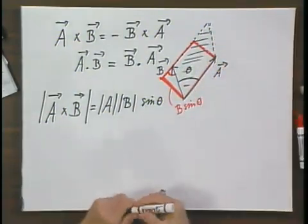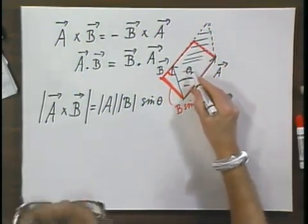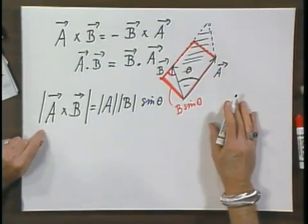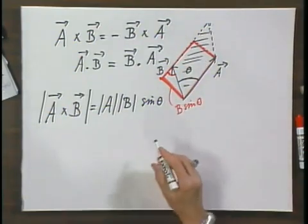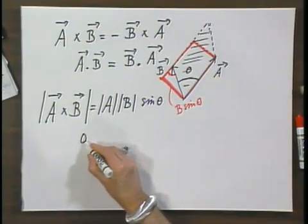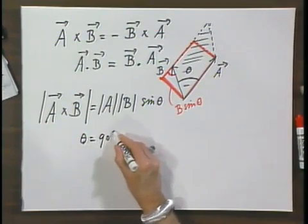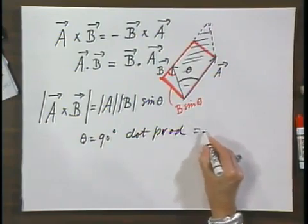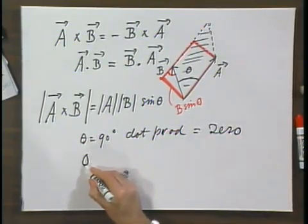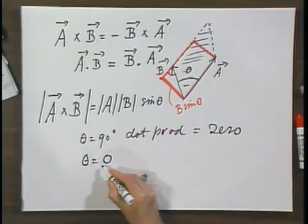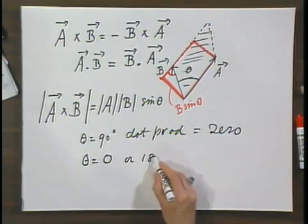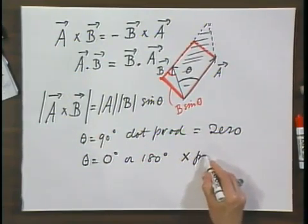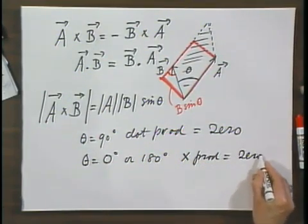It follows immediately that if theta is zero degrees or 180 degrees, the cross product is zero. When theta is 90 degrees, the dot product equals zero. When theta equals zero degrees or 180 degrees, the cross product equals zero.